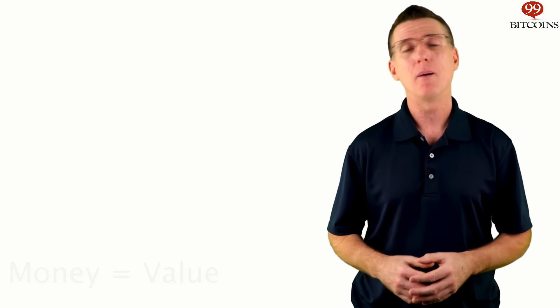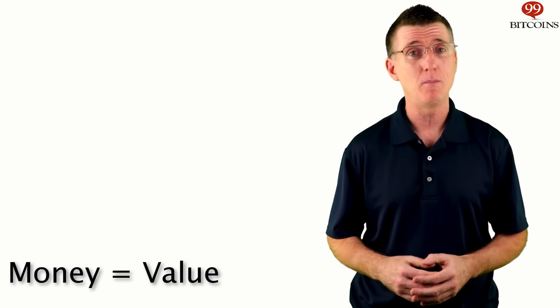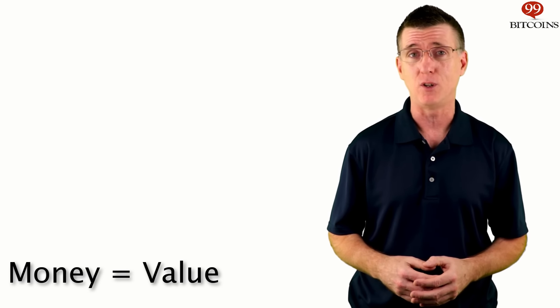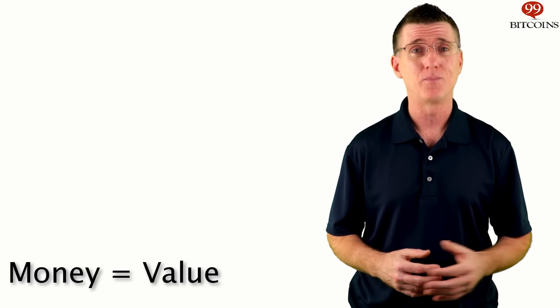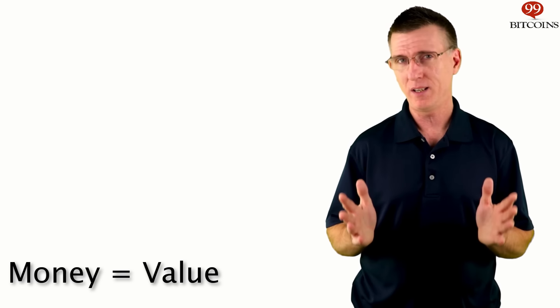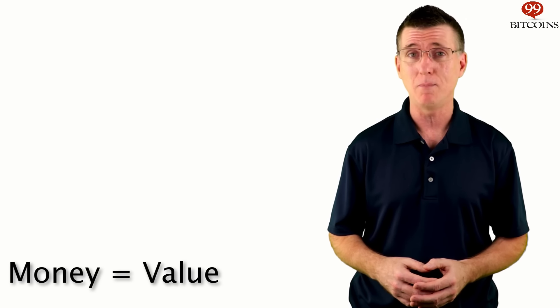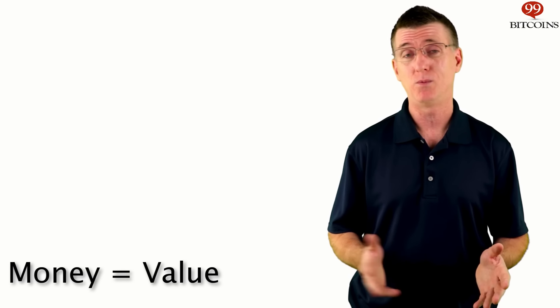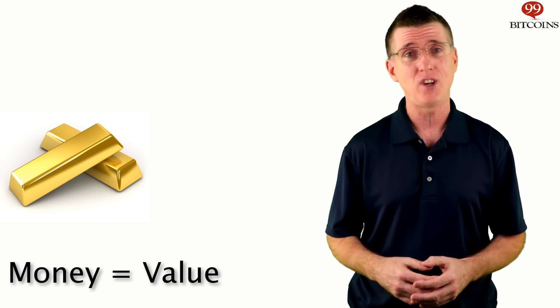Before we talk about Bitcoin, I want to take a moment and talk about money. What is money exactly? At its core, money represents value. If I do some work for you, you give me money in exchange for the value I gave you. I can then use that money to get something of value from someone else in the future. Throughout history, value has taken many forms and people have used a lot of different materials to represent money — salt, wheat, shells, and of course gold — all have been used as a medium of exchange.